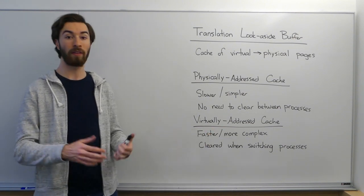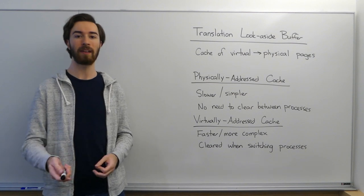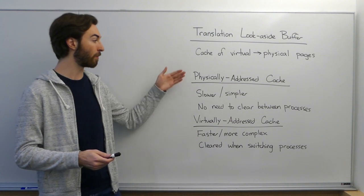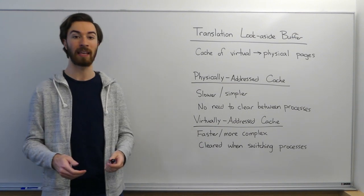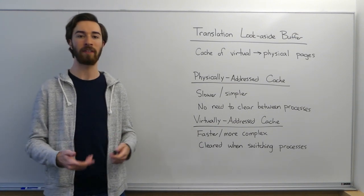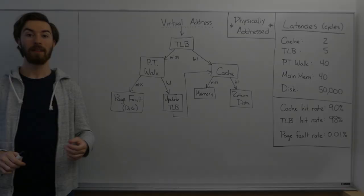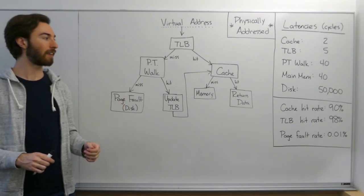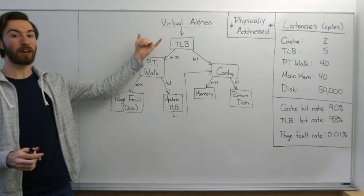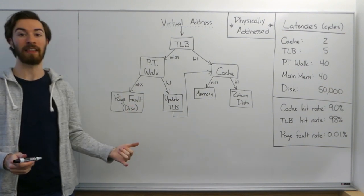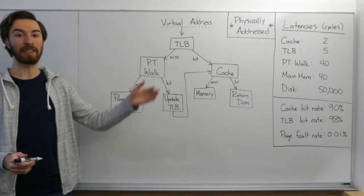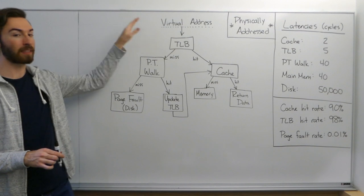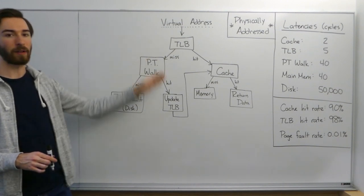So now that we've gone over these different concepts, let's look at an example problem where we work through memory accesses for both the physically addressed cache and the virtually addressed cache and see what the average number of cycles they take is. So now we want to work through this problem of calculating the average number of cycles it takes to take our virtual address and return the data that we want given a physically addressed cache. In a physically addressed cache, the way a virtual address is converted into the data follows this flowchart.